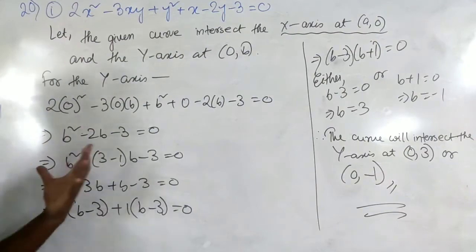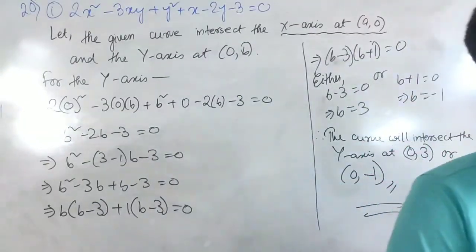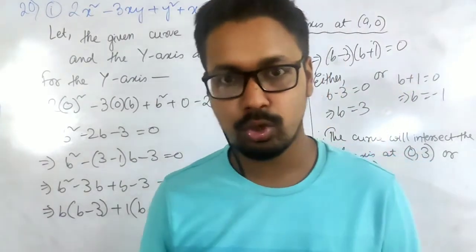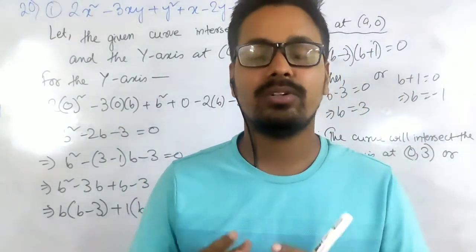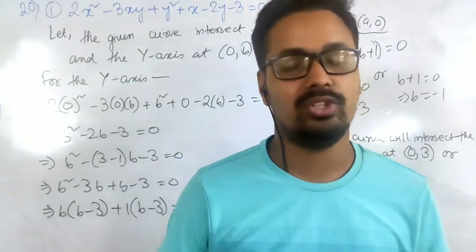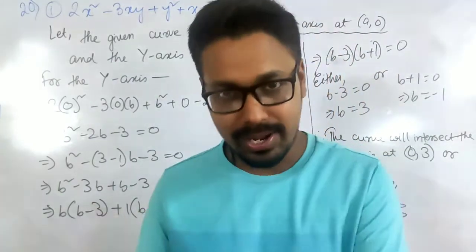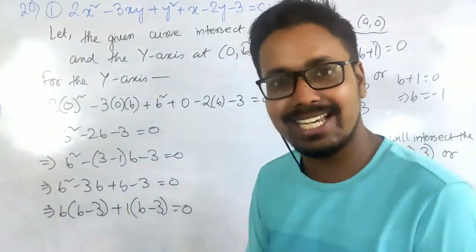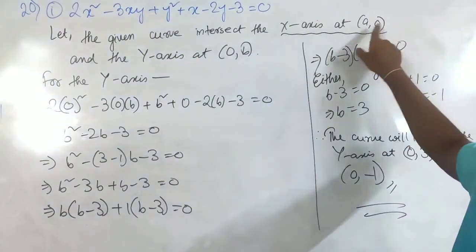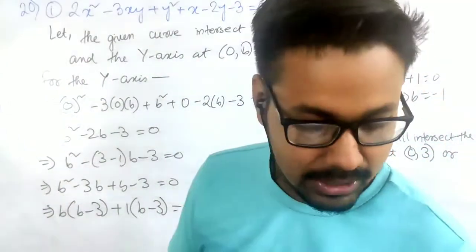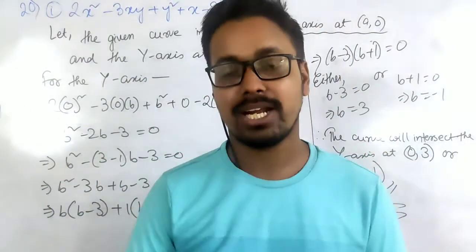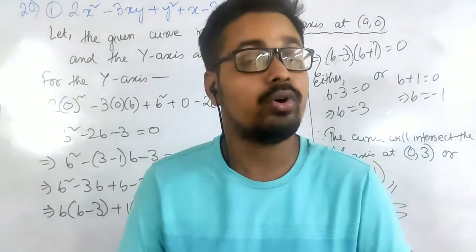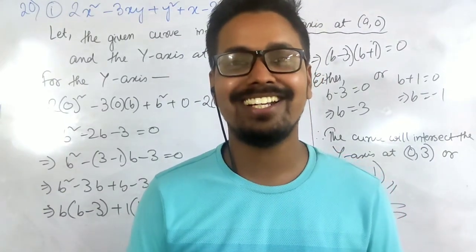That's how we solve these types of sums. Remember that for any point on the x-axis the y-coordinate is always 0, and for any point on the y-axis the x-coordinate is always 0. Sub-questions 2, 3, and 4 of question 20 are exactly the same type — take two points and solve. I hope you can complete those sums. If you find any problem, ask in the comment section and I will solve it or make a video on it. Thank you everyone for watching, and until next time, cheers!